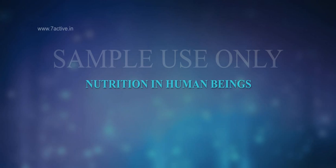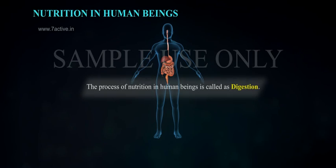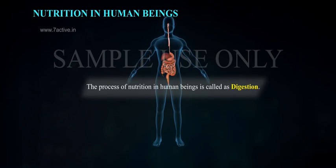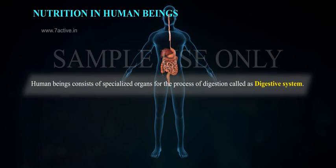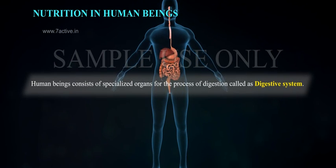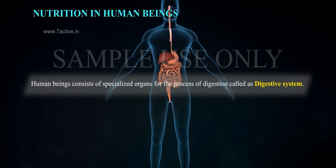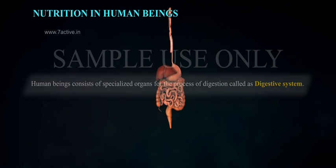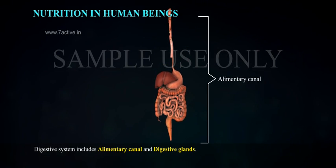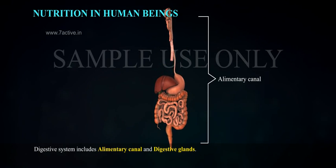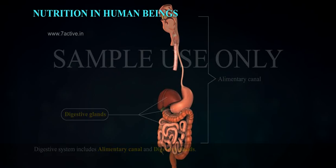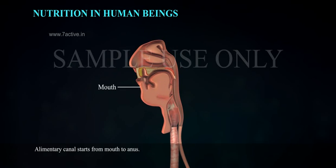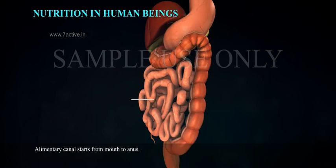Nutrition in Human Beings: The process of nutrition in human beings is called digestion. Human beings consist of specialized organs for the process of digestion, called the digestive system. The digestive system includes the alimentary canal and digestive glands. The alimentary canal starts from the mouth to the anus.